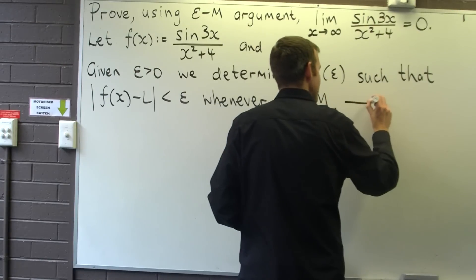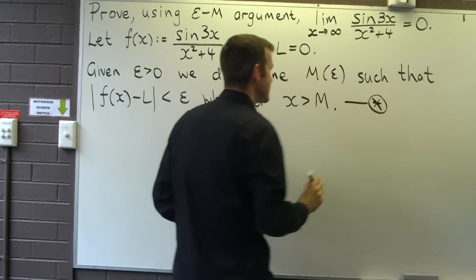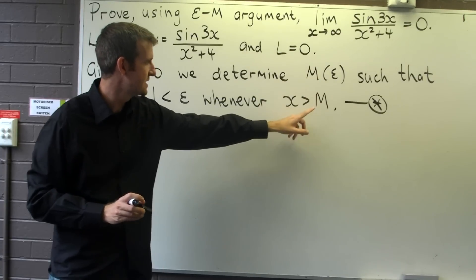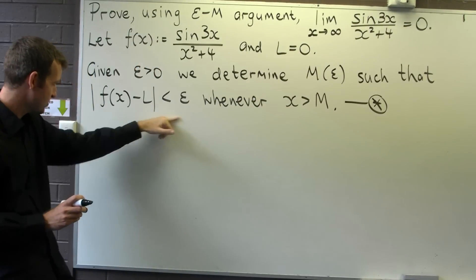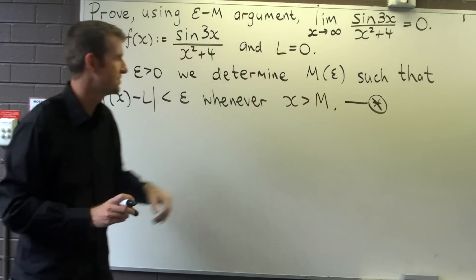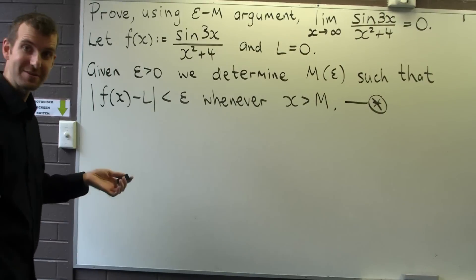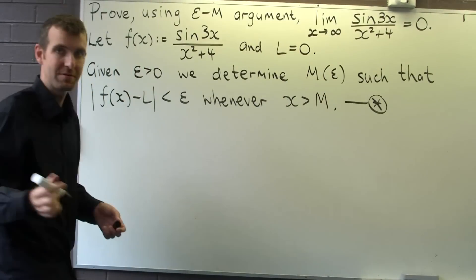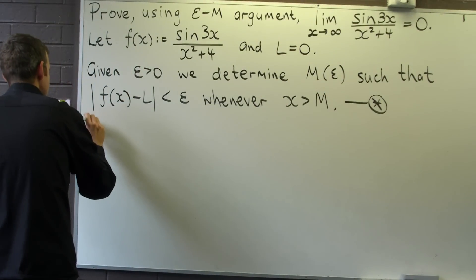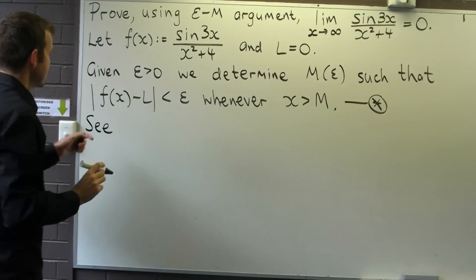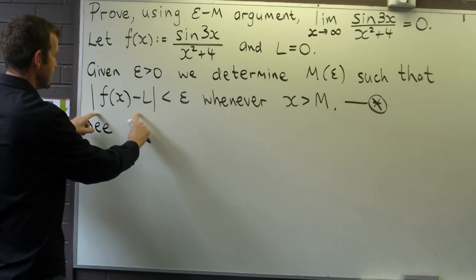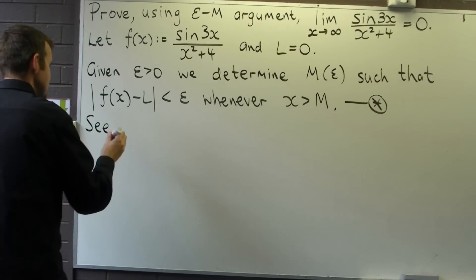Alright, so we're going to come back to that. Essentially what we want to do is determine this M(ε) so that this is true whenever this is true. Alright, so how do we do it? Well, let's go and hunt for this M(ε). Now the technique that I like to use here is just work with this and try to simplify as much as possible.